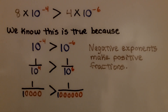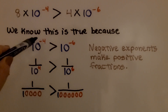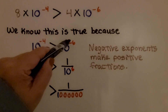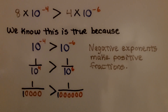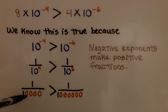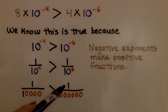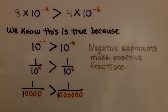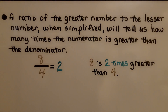We found that 8 times 10 raised to the negative 4th power is greater than 4 times 10 raised to the negative 6th power. We know this is true because 10 raised to the negative 4th power is greater than 10 raised to the negative 6th power. Remember, negative exponents make positive fractions, so we can write this as 1 ten-thousandth over 1 millionth.